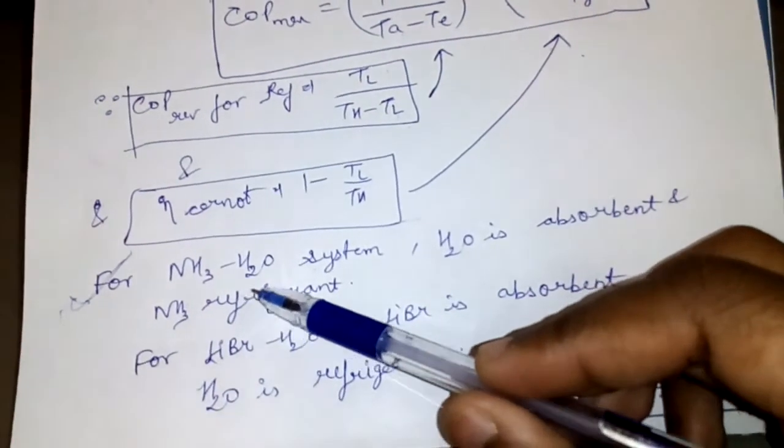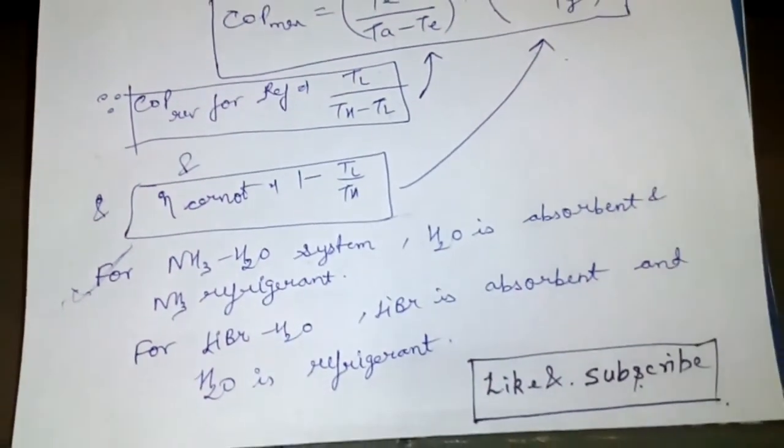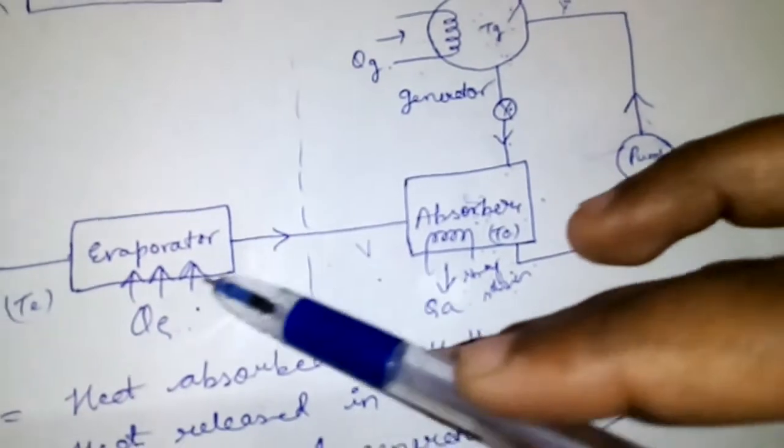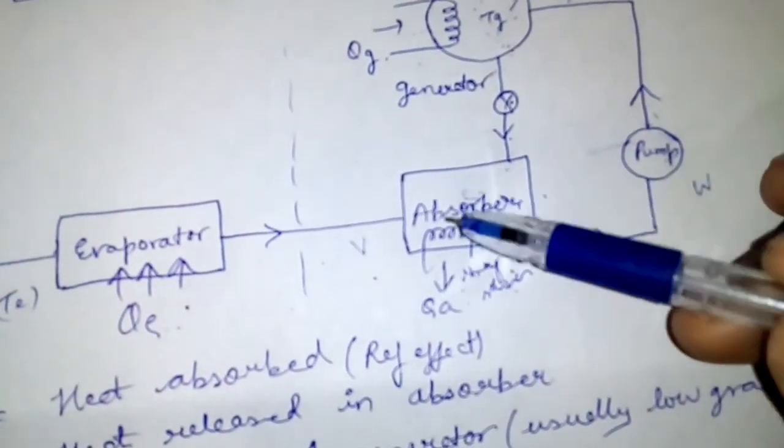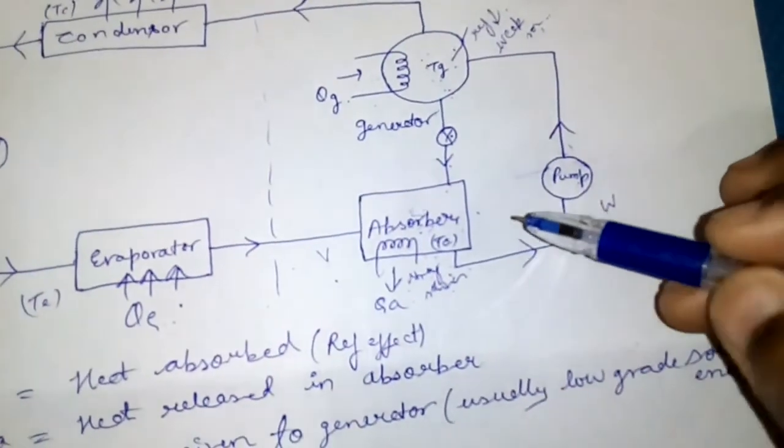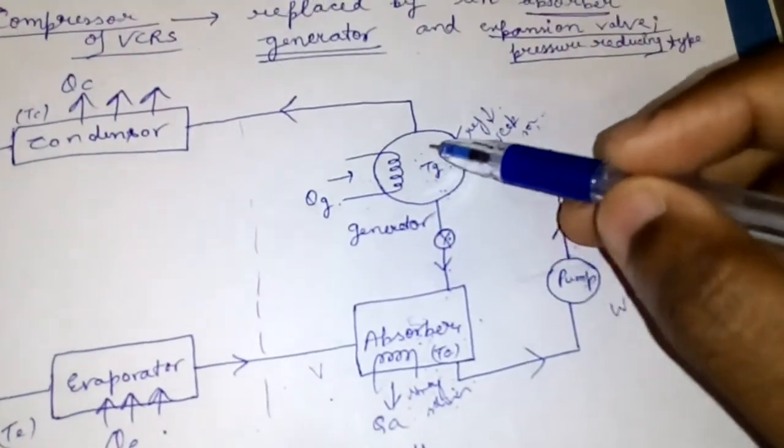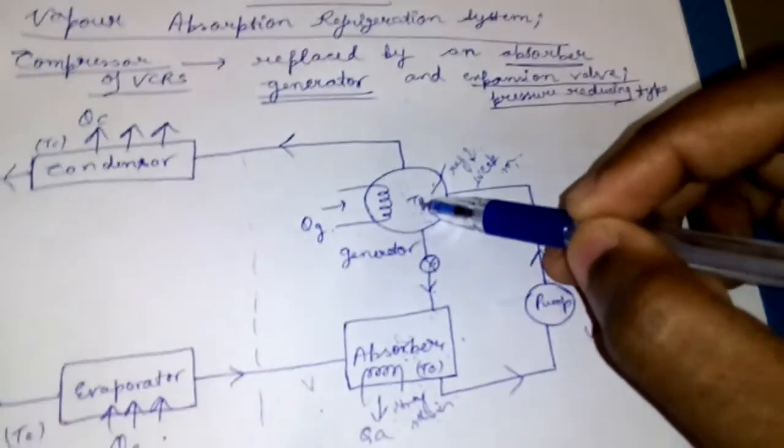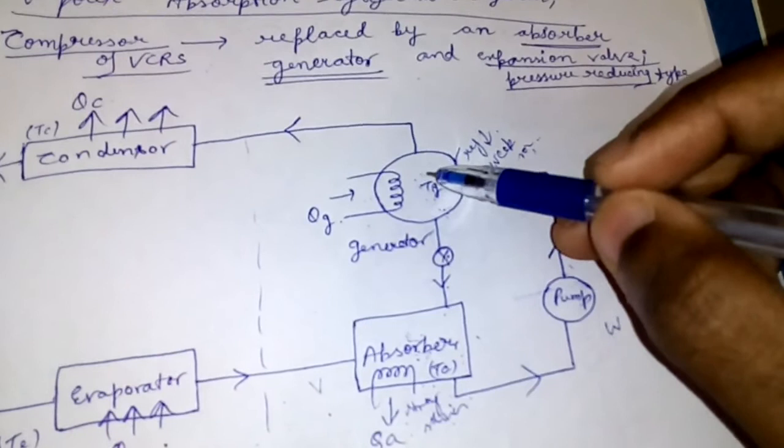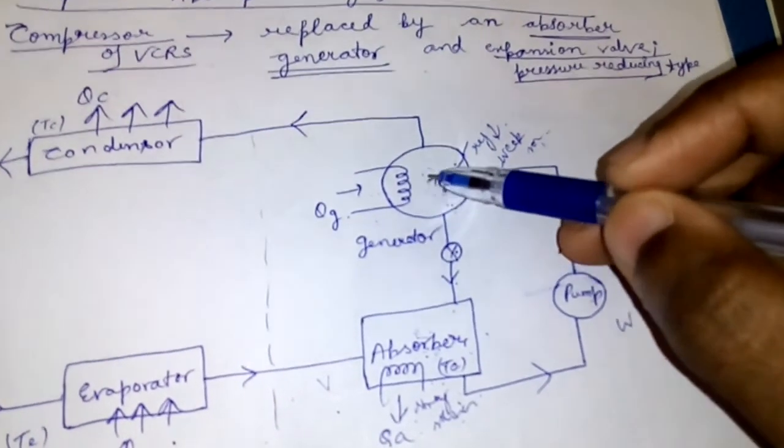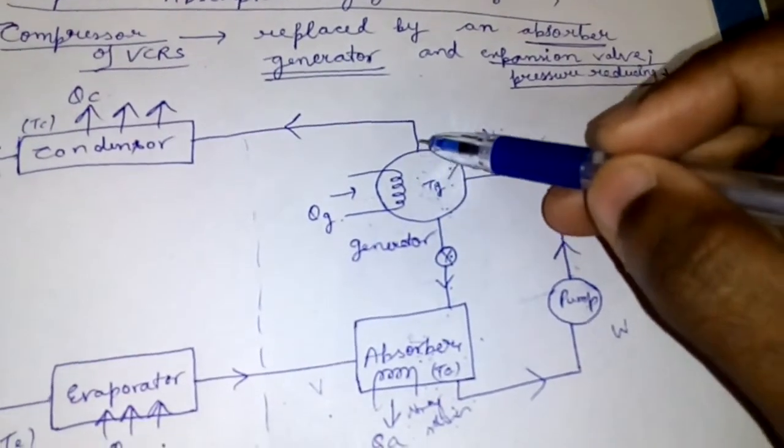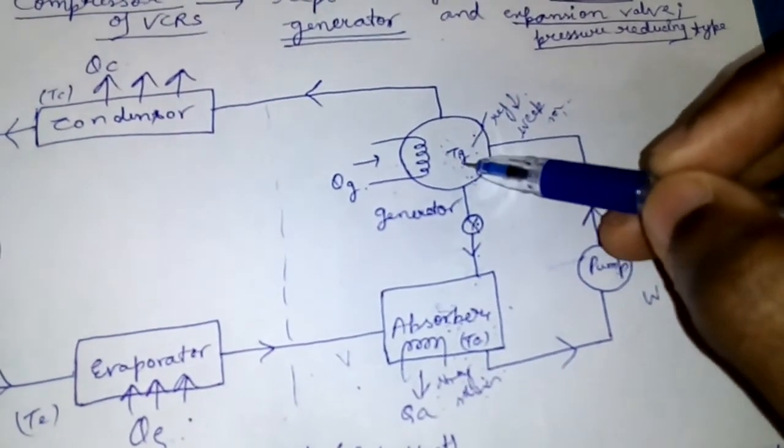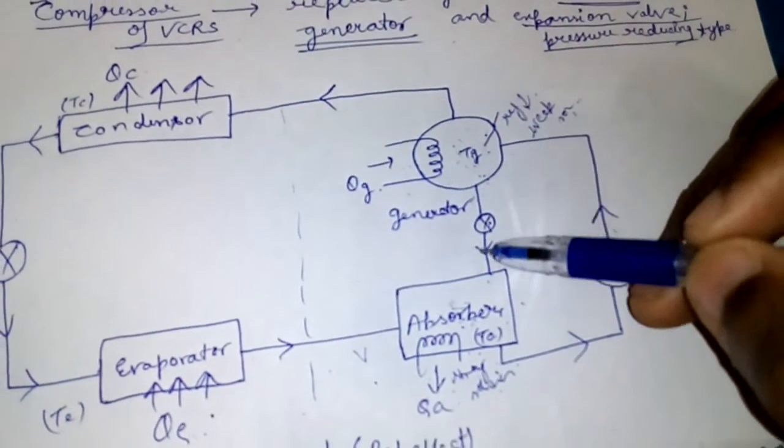It can function very well. NH3 vapors come, they get absorbed here, strong solution is formed. NH3 plus H2O liquid strong solution is pumped here. The affinity at high temperature, because of the heat supplied, the temperature increases, so the affinity of water for ammonia vapors decreases. So ammonia vapors get separated and the refrigerant concentration here decreases, so it is termed as weak solution. It is again brought to absorber pressure by pressure reducing valve.